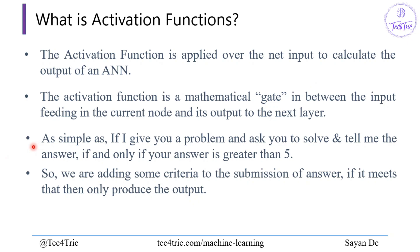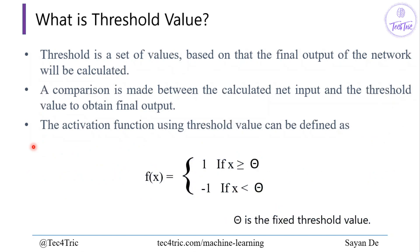Let's take an example. If I give you a problem and ask you to solve it and tell me the answer only if your answer is greater than 5 — we are adding some criteria to the submission of the answer. If it meets that criteria, then only produce the output. This is the concept of the threshold value. The threshold is a set of values based on which the final output of the network will be calculated, with a comparison made between the calculated net input and the threshold value.